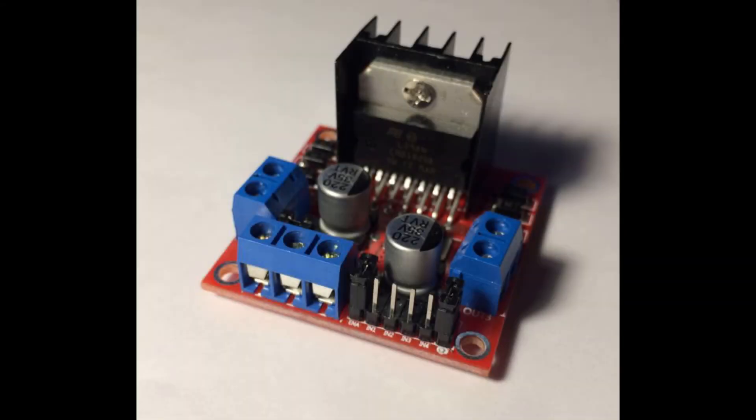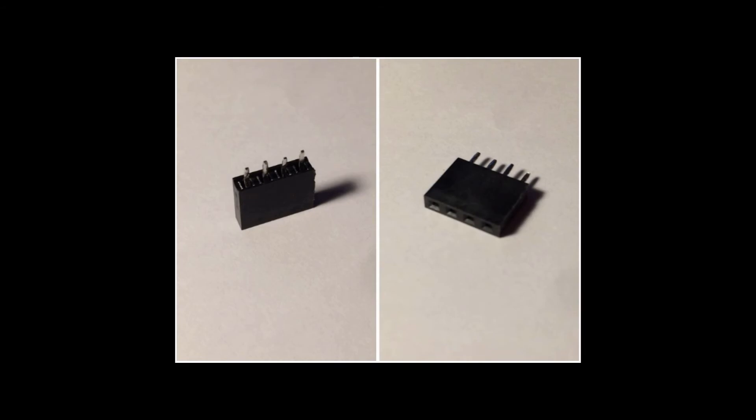Last thing that I want to discuss are the H-bridge control signal input connections. To make the connecting process simpler I would highly recommend to get one of these connectors. You have to solder the control signal wires to this connector and that way you can easily connect and disconnect the signal pins at any time.